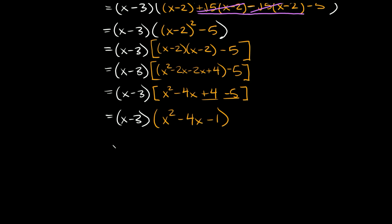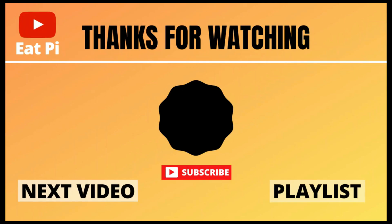When you multiply those together you get the exact same final answer: x cubed minus seven x squared plus eleven x plus three. If you found the video helpful, definitely leave a thumbs up below, and if you have any other questions or want to see any other examples, just let me know in the comment section below.